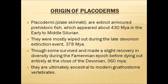Placodermy fishes are now extinct. They appeared about 430 million years ago in the middle Silurian period and disappeared from planet Earth around 378 million years ago during the Devonian extinction event. During the Devonian period, a major extinction event occurred and many organisms — animals and plants — completely disappeared. Some placodermians survived and made a slight recovery in diversity during the Famennian epoch before dying out entirely at the close of the Devonian era, 360 million years ago.